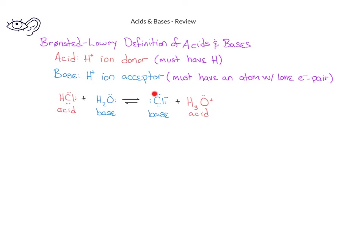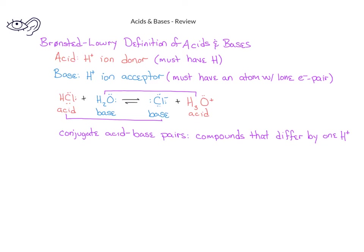When we look at an overall acid-base reaction, we notice, for example, in the case of water and hydronium ion, that they're related because they're essentially the same structure, but they differ by one hydrogen ion. Similarly, hydrochloric acid and the chloride ion are also related but differ only by one hydrogen ion. In an acid-base reaction, those compounds that differ by only one hydrogen ion are known as conjugate acid-base pairs. In a conjugate acid-base pair, the compound that has more hydrogen ions is going to be the acid, and the compound with fewer hydrogens will be the base component.